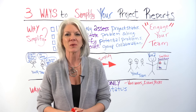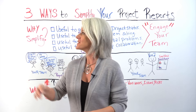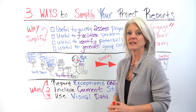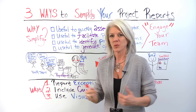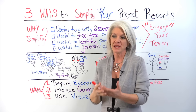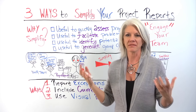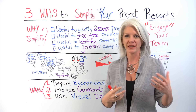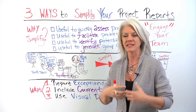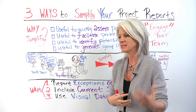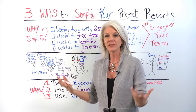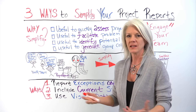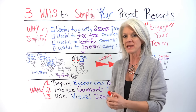Hello everyone. Today's whiteboard session is on three ways to simplify your project reports. You may ask why do I need to simplify? After all, there's a ton of information on your project — so much about the issues, the risk, the activities, the scope, the stakeholders, and resources. How do you simplify all of that, or why would you even want to? Why get rid of valuable information?